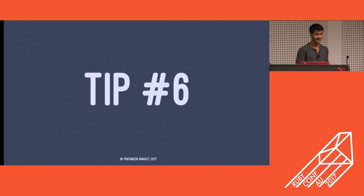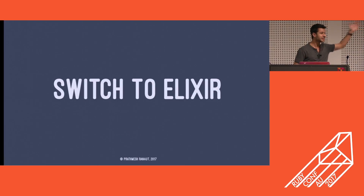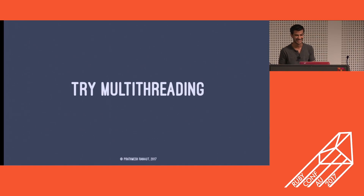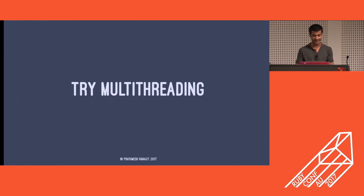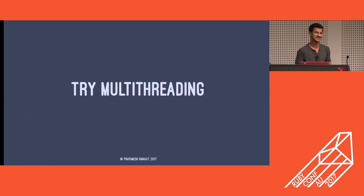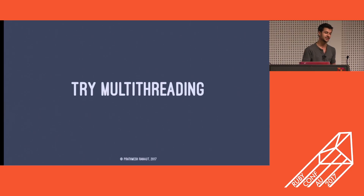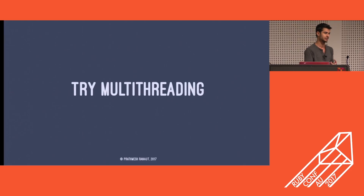Moving on to tip six — I guess this is the secret key to performance heaven. It's multi-threading. There was a really wonderful talk by Marcus yesterday about actors and Celluloid, and I thought it was pretty neat what Celluloid could do. If you are not a fan of Elixir, I think you should give Celluloid a try — it really improves the performance of your app. The particular implementation of Ruby I'd suggest using with Celluloid is probably JRuby or Rubinius, and both are pretty well supported by Celluloid.